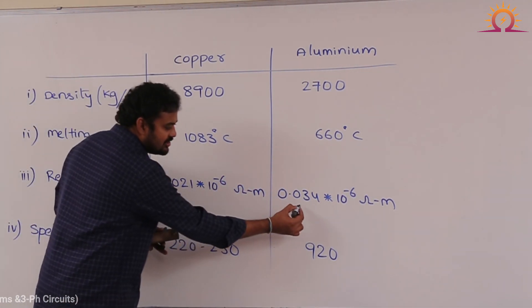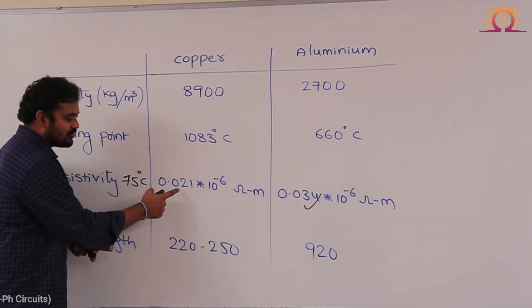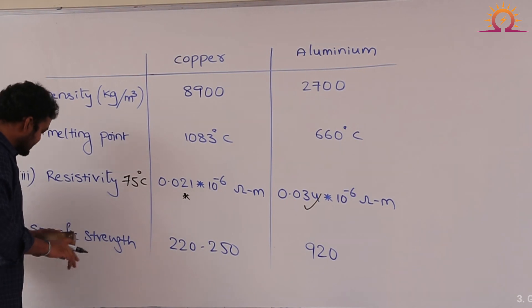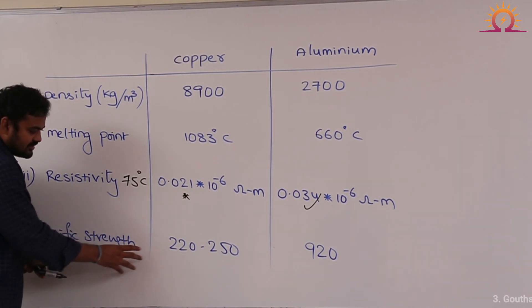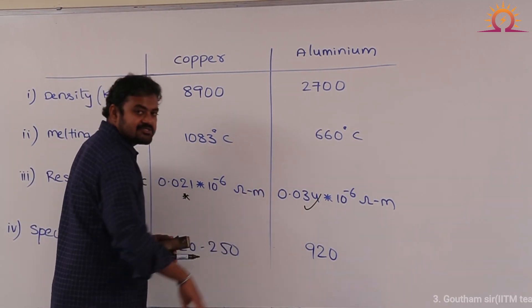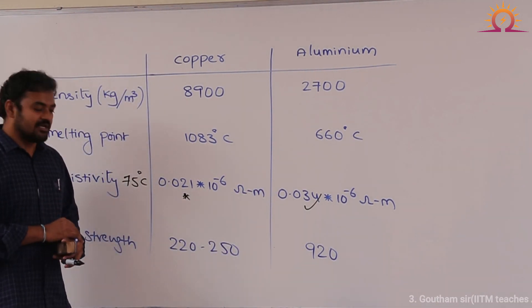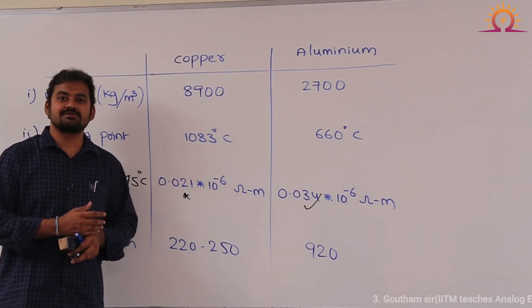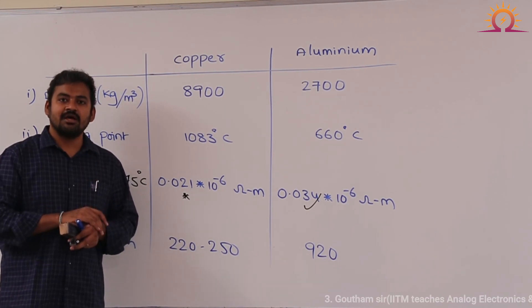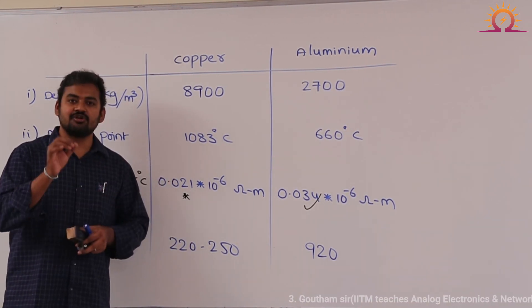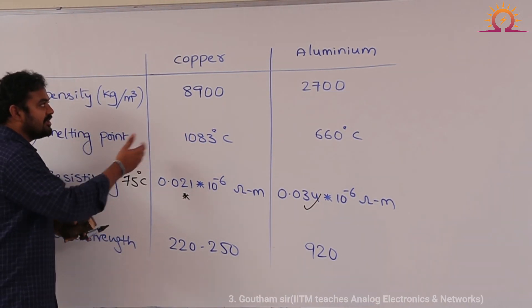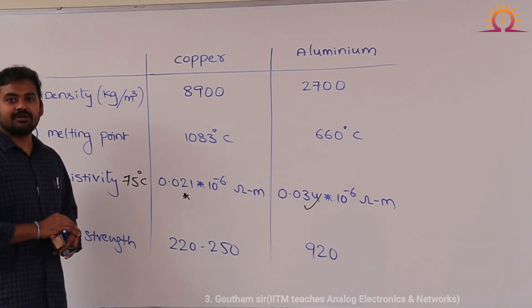Aluminum resistivity is definitely more than copper — this is one more superior quality for copper material. Coming to specific strength, it is 220 to 250 for copper and 920 for aluminum. But in electrical machines, specific strength does not matter, because the winding is inside the machine, bounded in slots and around the core. When you come to transmission lines, specific strength becomes an important aspect.